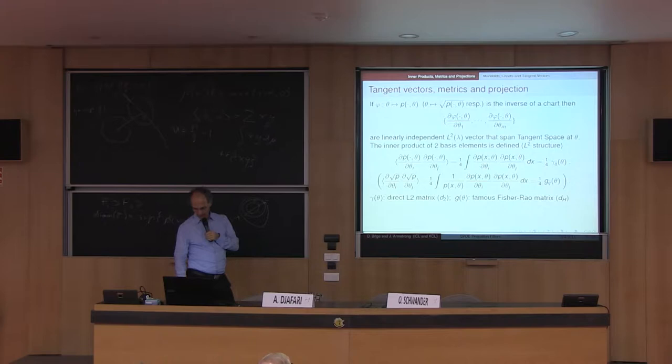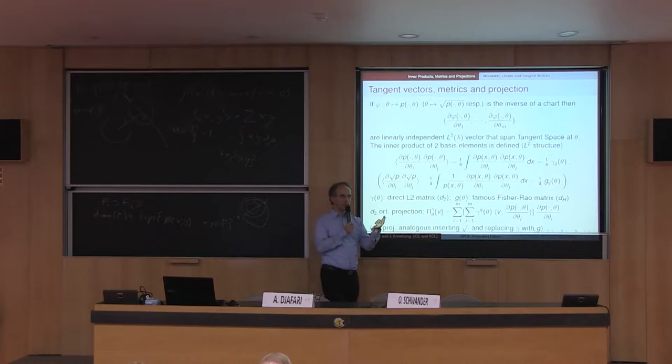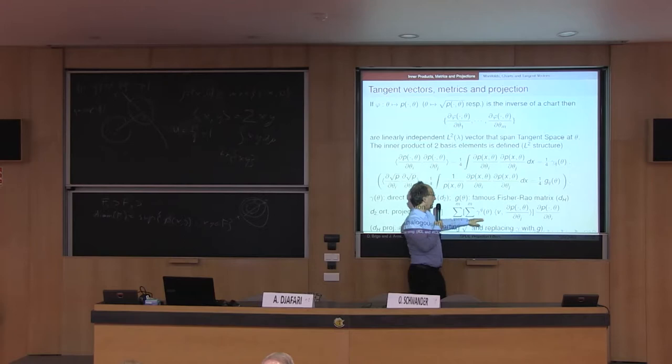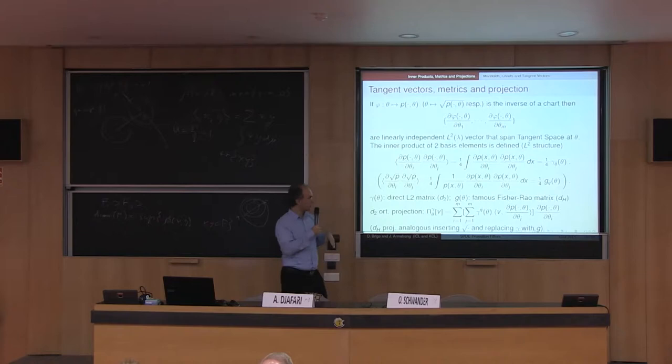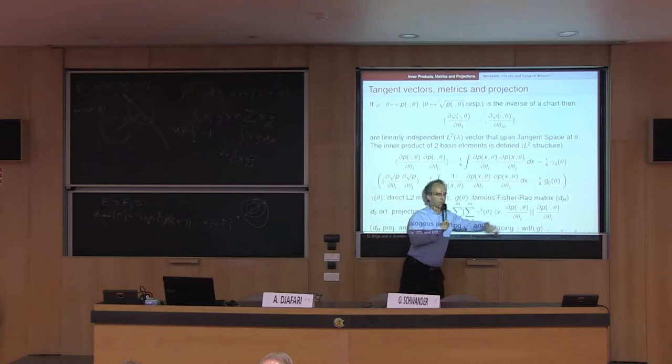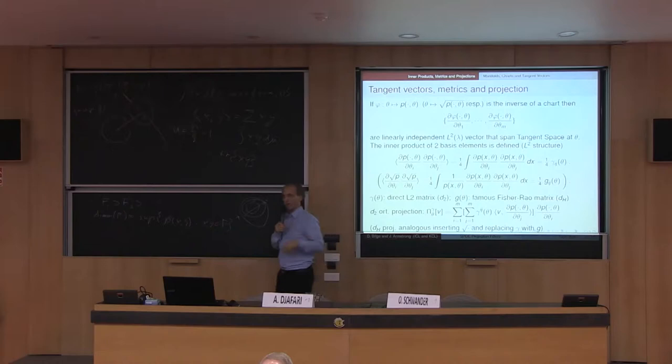Because you have an inner product and a metric, you can immediately compute a projection. You can project from the total infinite dimensional L2 space into the finite dimensional family you've chosen, using the standard orthogonal projection formula. You can do it either with the direct L2 metric, or with the square roots and the Fisher information metric, using the Fisher-Rao-Hellinger distance.